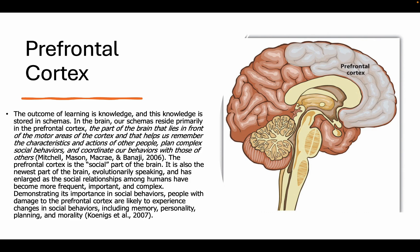The prefrontal cortex is the social part of the brain and also the newest part of the brain evolutionarily speaking, and has enlarged as the social relationships among humans have become more frequent, important, and complex. People with damage to the prefrontal cortex are likely to experience changes in social behaviors, including memory, personality, planning, and morality.